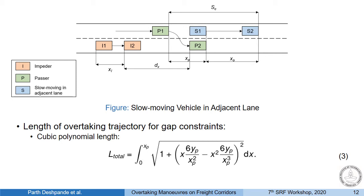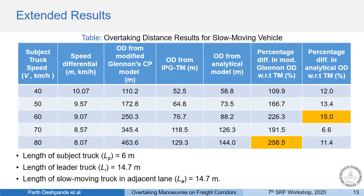As seen in the figure, XP is the overtaking distance and it uses constraints similar to what was presented earlier — curvature and gaps. Equation 3 shows the length of the cubic polynomial trajectory used to enable the gaps constraint. We also tried modifying Glennon's critical point PSD model by replacing the oncoming vehicle with a slow moving vehicle, which essentially involves flipping the direction of motion of the vehicle in the adjacent lane.